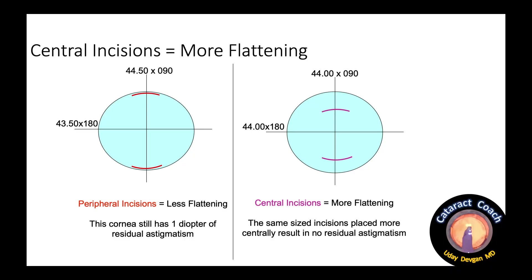Now, the more central the incision, the more power it has. If you have incisions very much at the periphery, it's going to cause less flattening. Bring those same incisions more centrally at a smaller optical zone and there's more flattening. But be careful — if you're more central, you can also induce some irregularities in the astigmatism, so you want to be very careful with these.